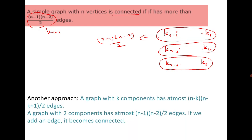Another approach uses the result that a graph with K components has at most (n−k)(n−k+1)/2 edges. If we consider two components, it has at most (n−1)(n−2)/2 edges — which is the maximum. Therefore, if we add an edge, it becomes connected.